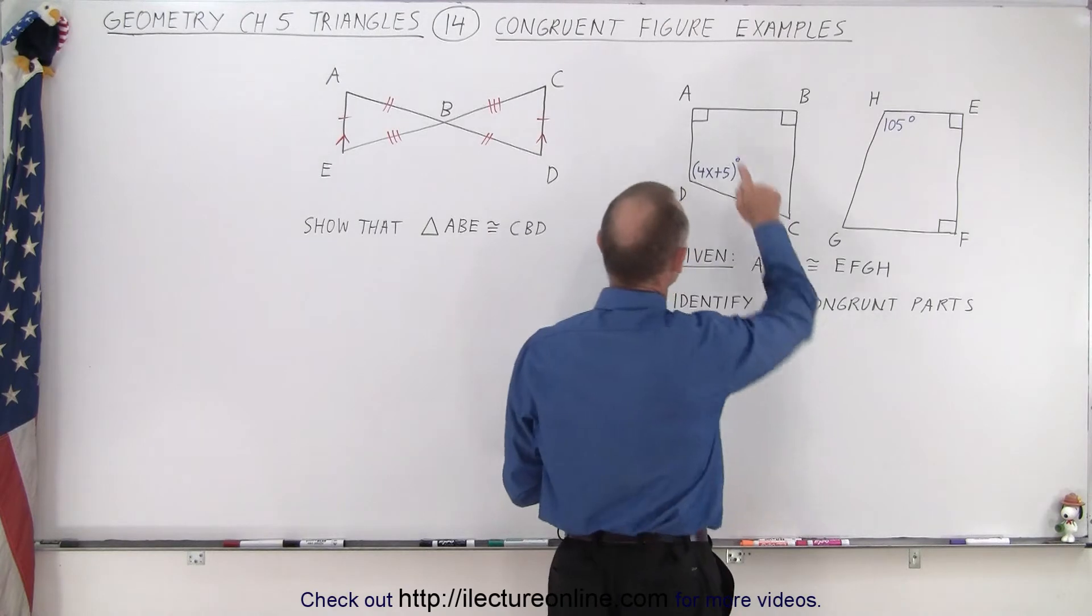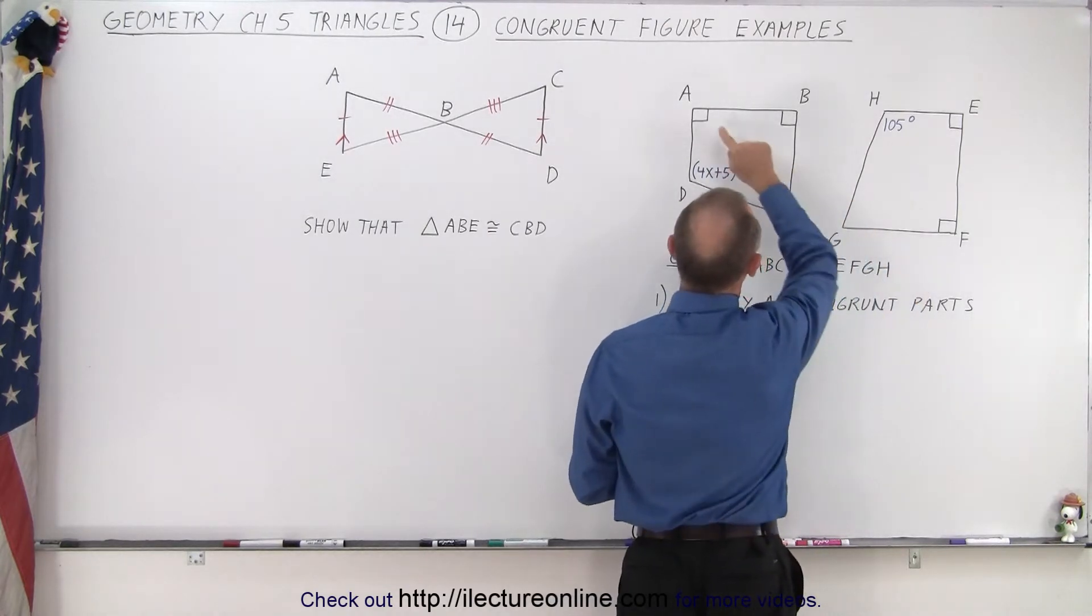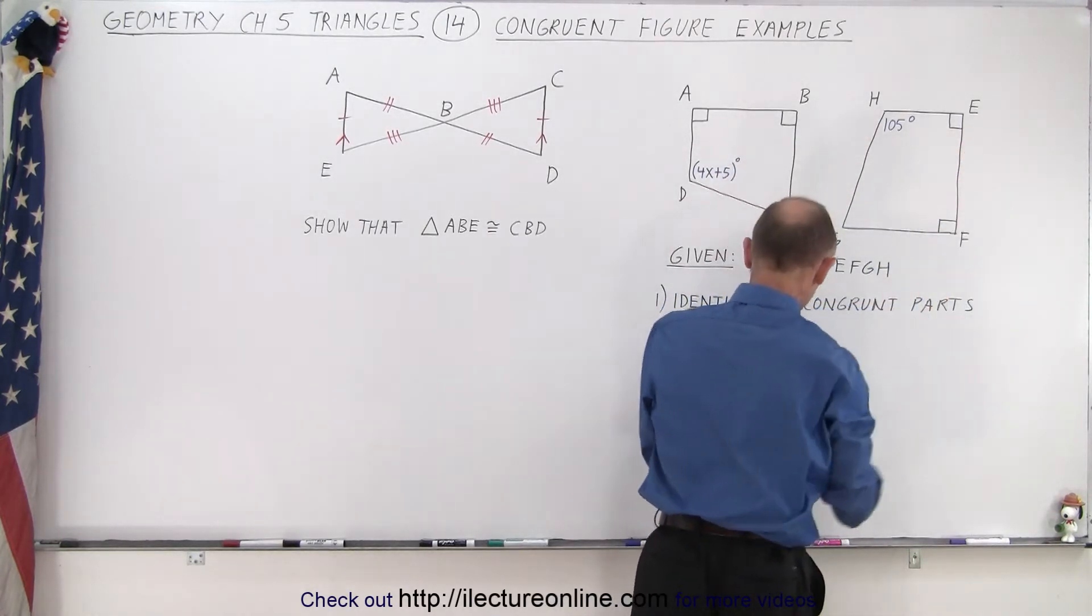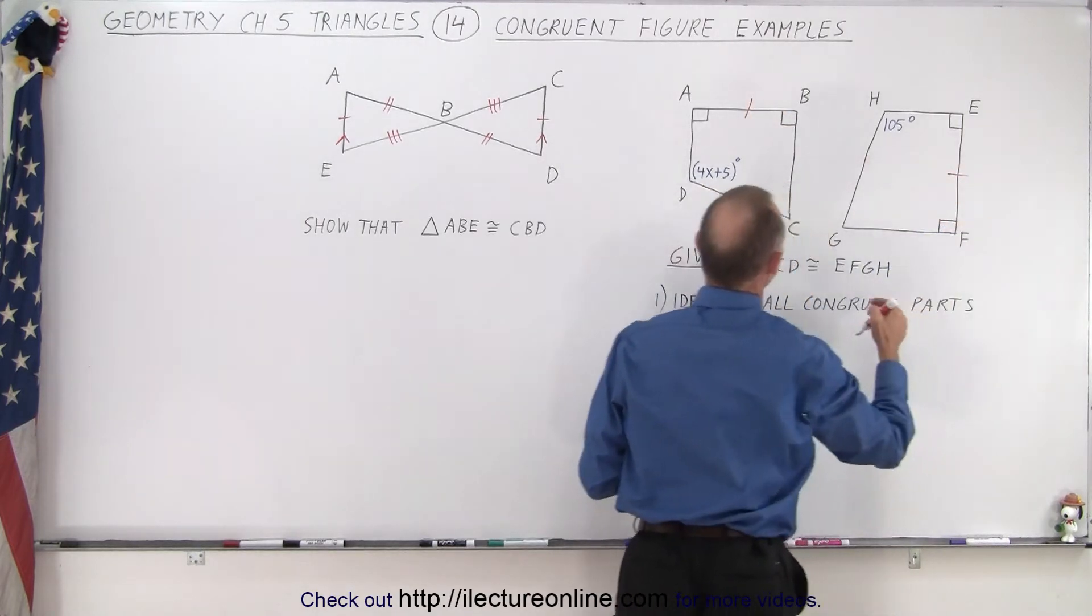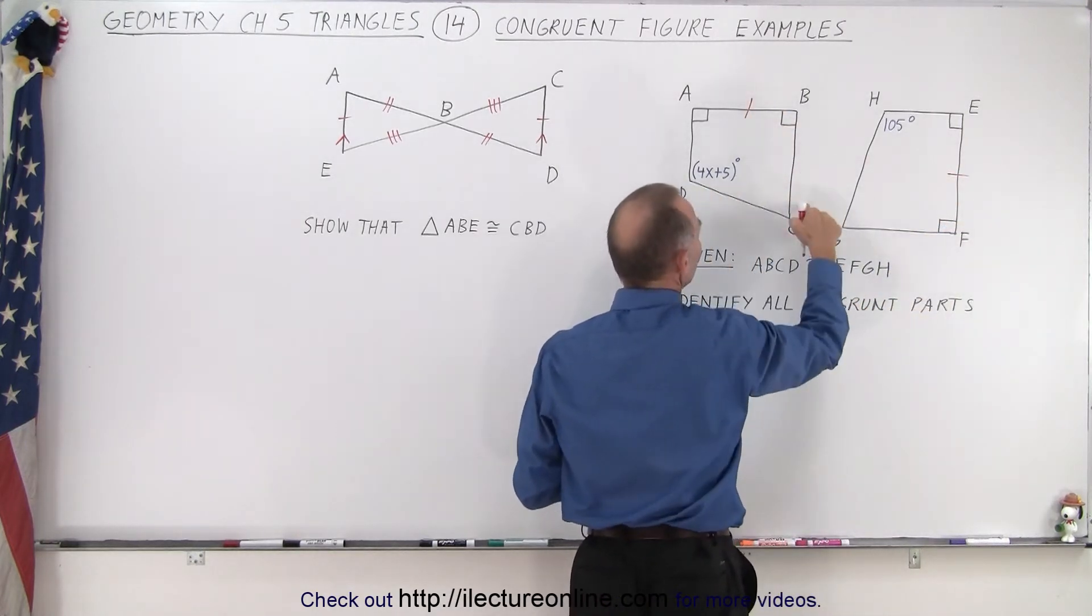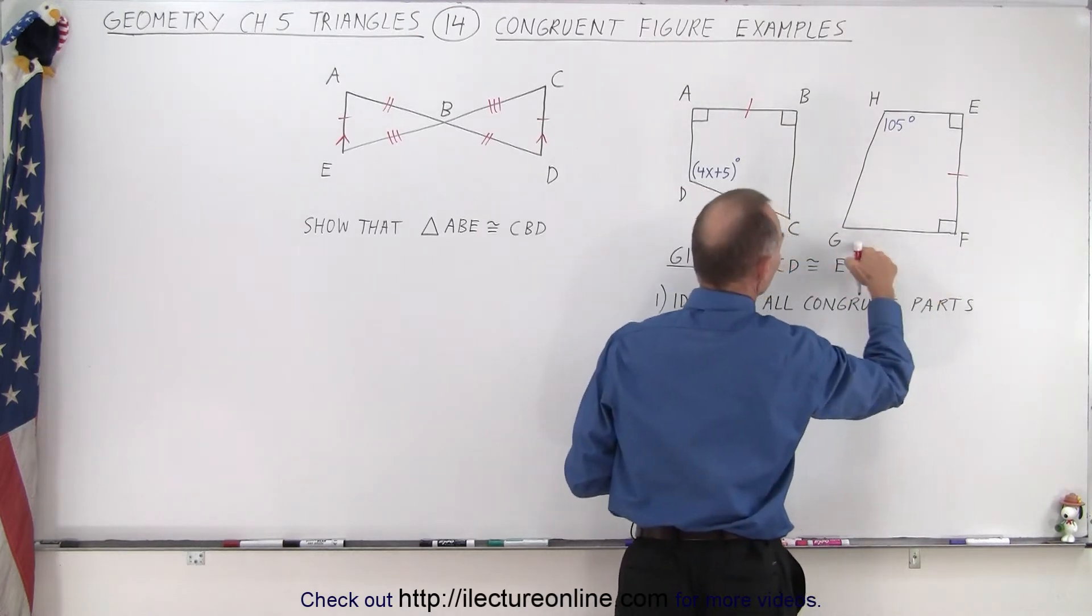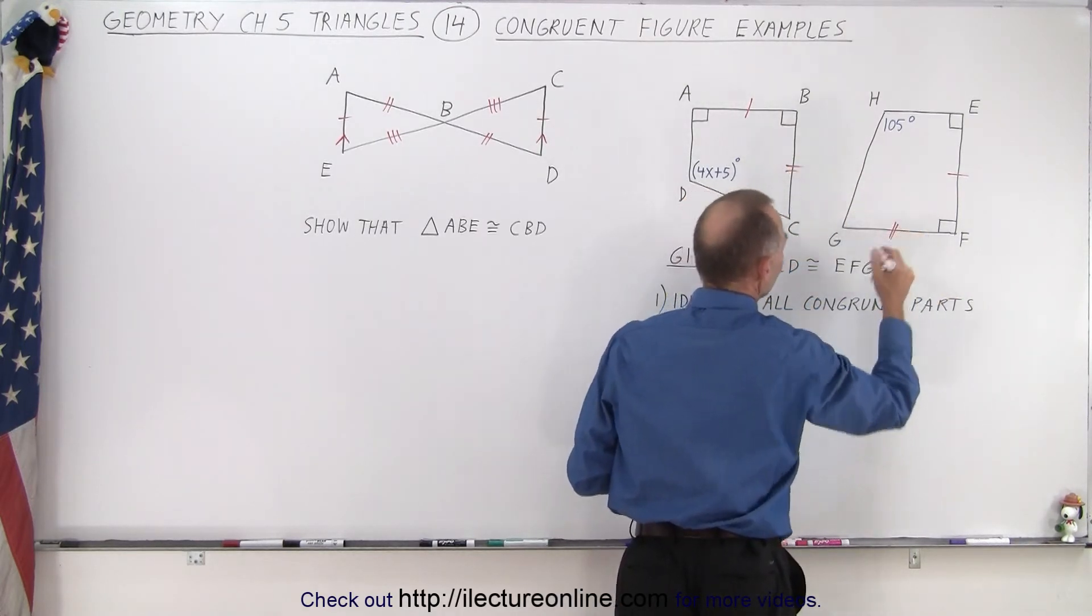So for sides, going from A to B, that means that has to have the same length as going from E to F. So we can say that this side has the same length as this side. Going from B to C must have the same length as going from F to G. So this must be the same as this.